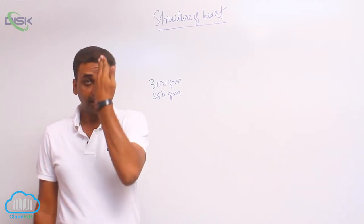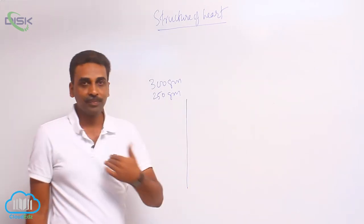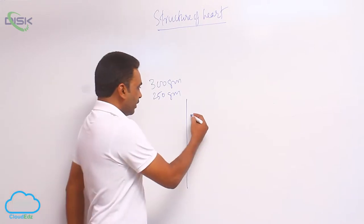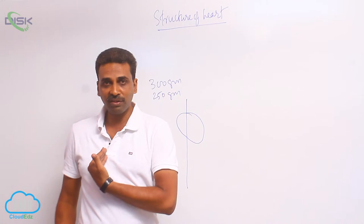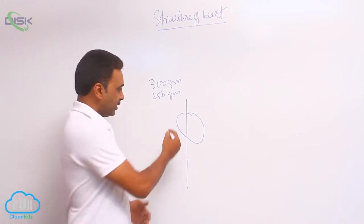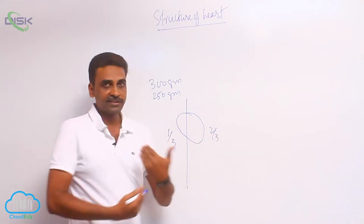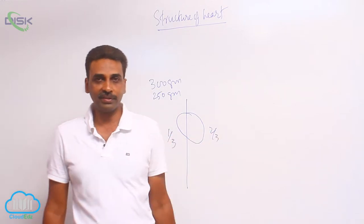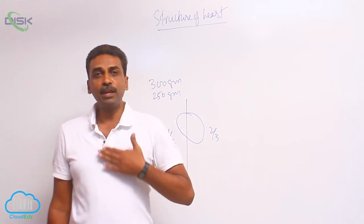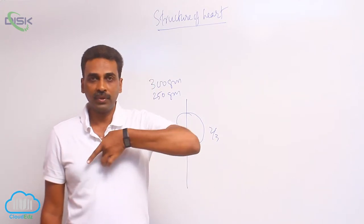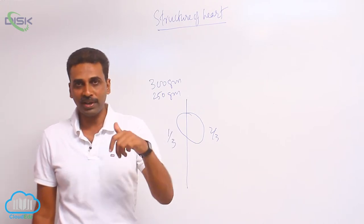If I take the central midline of the body and look at the location of the heart, one third is present on the right side and two thirds is present on the left side. And it is safely protected by the sternum — that bone is called the sternum, it is also called the breast bone.